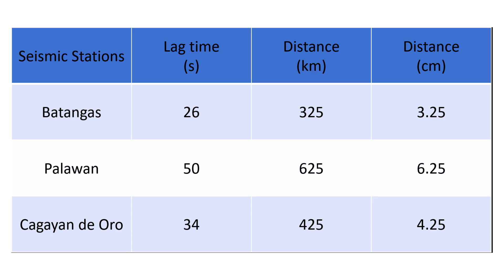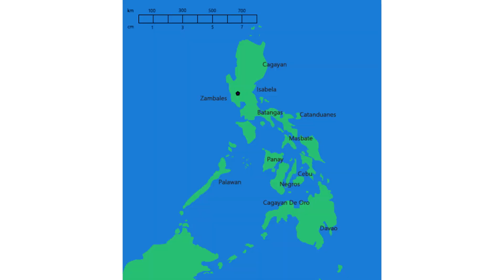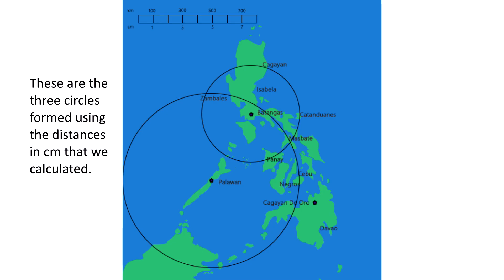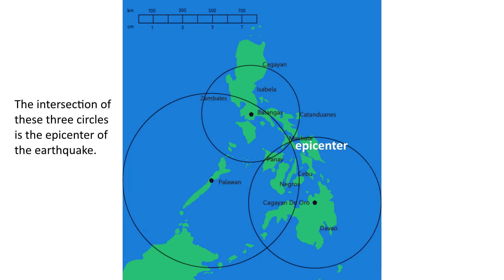Now, how do we locate the epicenter using the triangulation method? Using the Philippine map, center your compass on each seismic station and set the compass to the computed distance in centimeters, then draw a circle. You should get three circles that intersect or nearly intersect at a point. The intersection of these three circles is the epicenter of the earthquake.